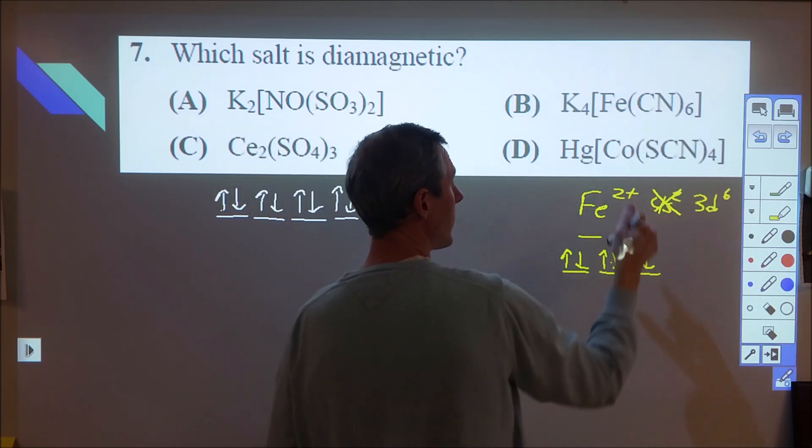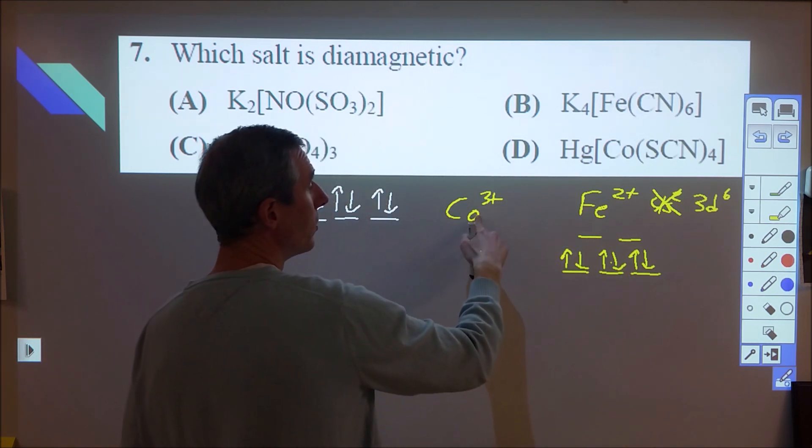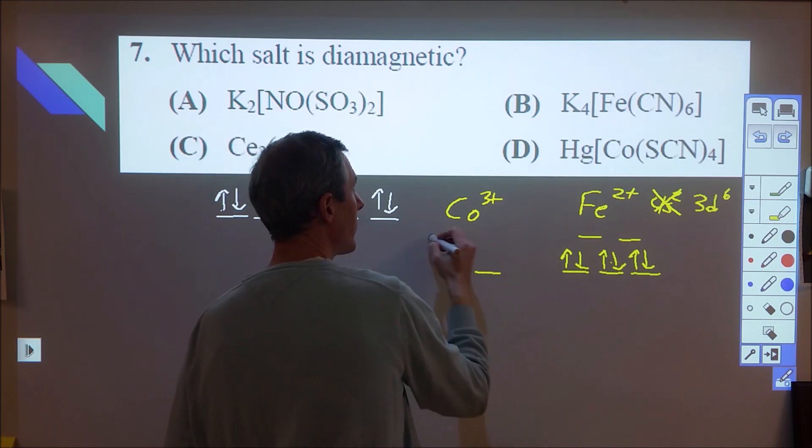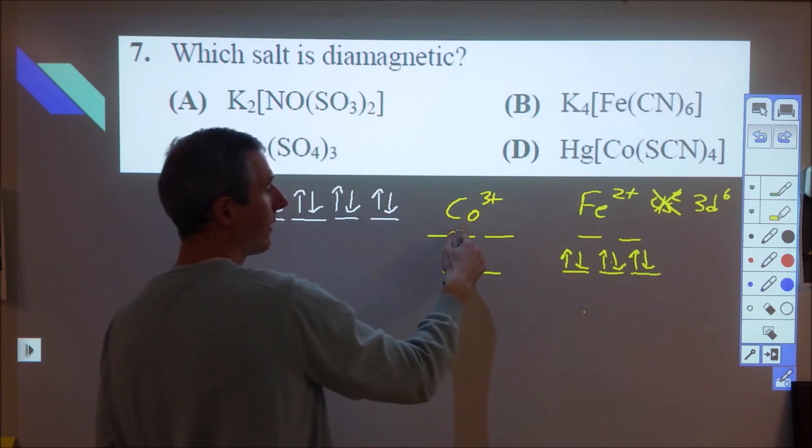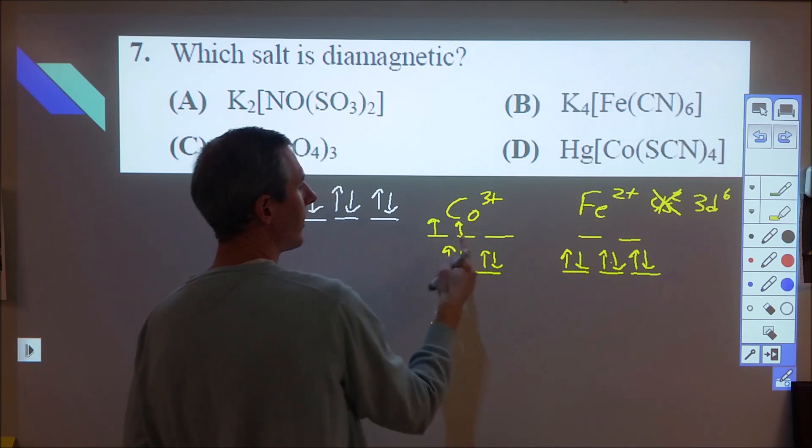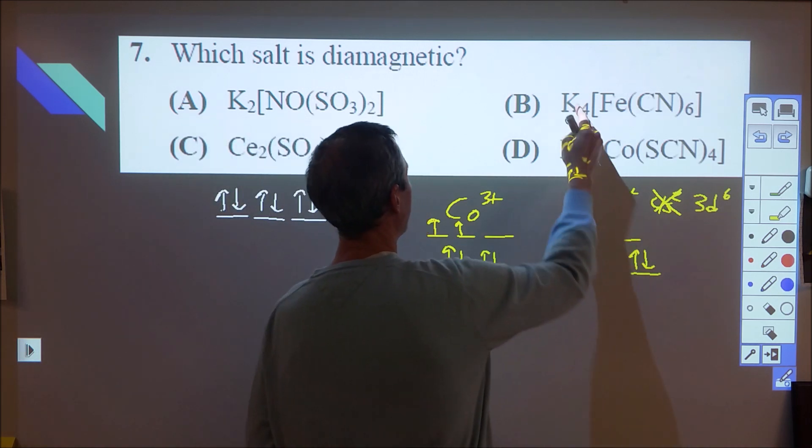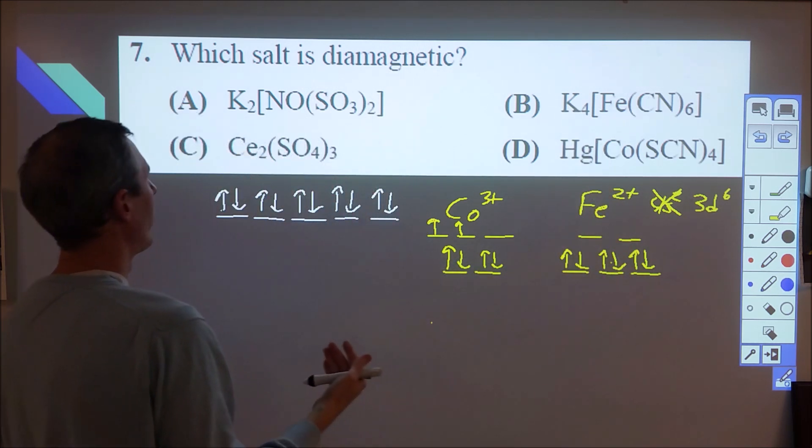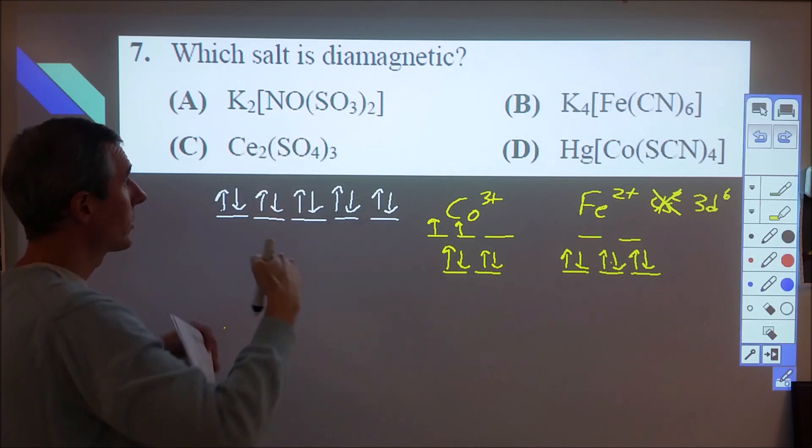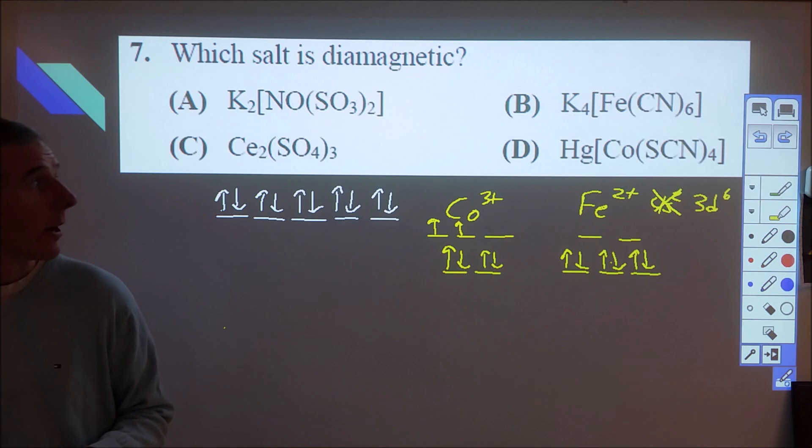So then I went through and looked at this, because here the cobalt is three plus. And that would also imply a 3d6 notation, because we would remove the 4s2, and we'd go from 3d7 to 3d6. But the difference is that this one only has four ligands, which means that it's more likely to have this tetrahedral splitting. And then if we put in our six electrons, we end up with two unpaired electrons up here. I'm not sure 100% that that's how we're supposed to figure this out, but that's the way that I came up with it, where it's actually functional. I don't really know what this is. And then this obviously would have no splitting, because there's no ligands present, and so that would just have a regular ionic compound.